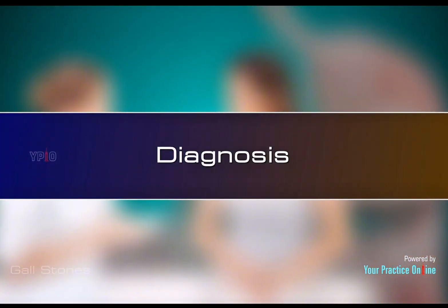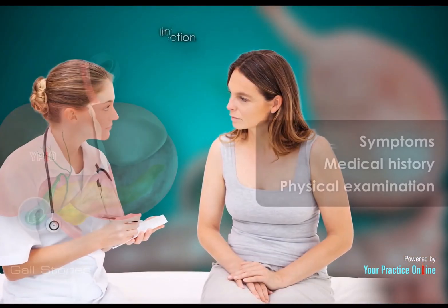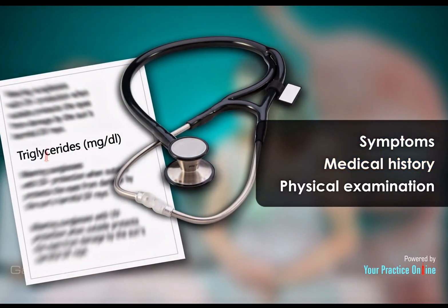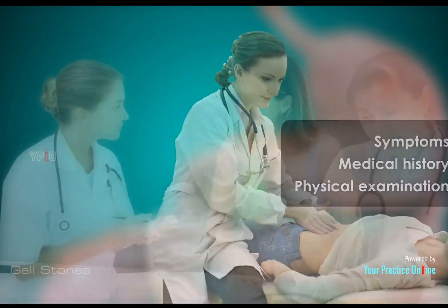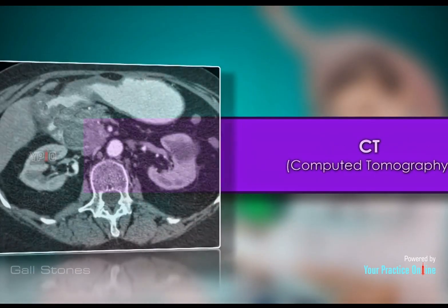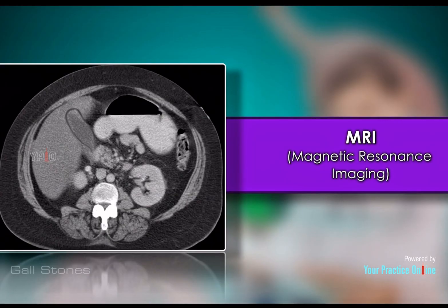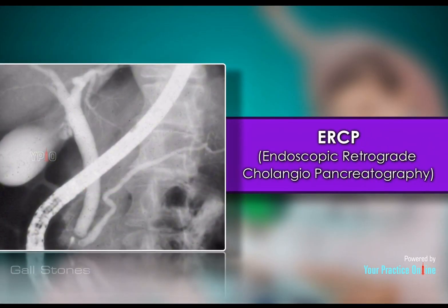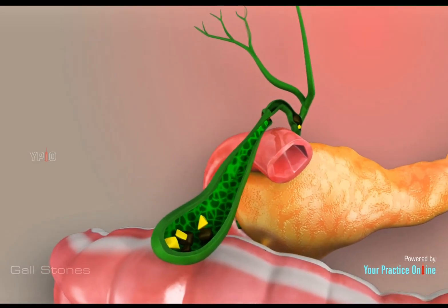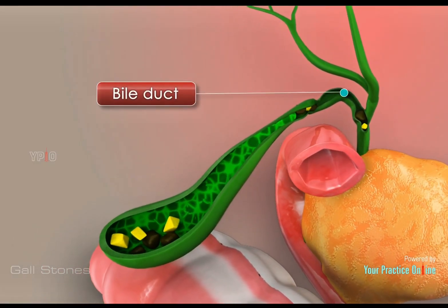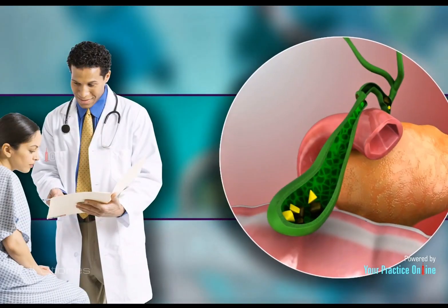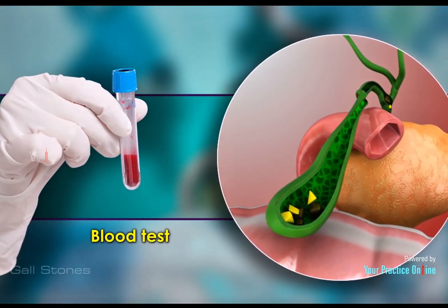A physician diagnoses gallstones based on symptoms, medical history, and physical examination. The diagnosis is confirmed based on findings from imaging studies such as ultrasound, CT cholangiography, MRI (magnetic resonance imaging), and ERCP (endoscopic retrograde cholangiopancreatography), which helps to locate gallstones in the gallbladder as well as bile ducts. The doctor may also request blood tests to check for any complications of gallstones.